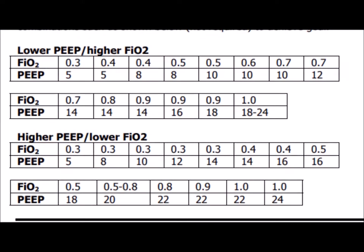The ARDSnet trial patient population were patients with ARDS, yet many of our patients who are not critically ill and don't have ARDS often get immediately ventilated on tidal volumes of 6 or 8 cc/kg. The trial also produced two different PEEP/FiO2 scales to guide titration according to patient oxygenation — comparing the low PEEP/high FiO2 scale to the high PEEP/low FiO2 scale. If we're standardizing care, this scale should be well known in every ICU.